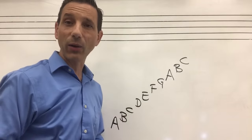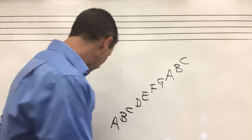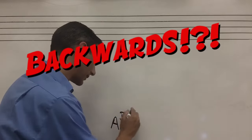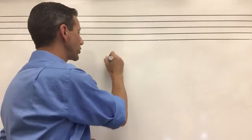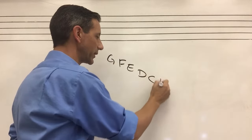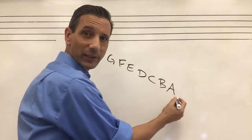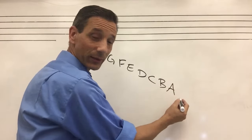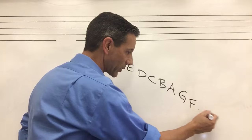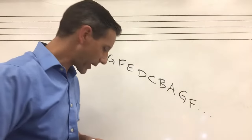Now going downward, you've got to learn to do the alphabet backward: G, F, E, D, C, B, A. And what's after A as we go down? G again, F, and so on down. It's really that simple.